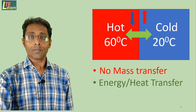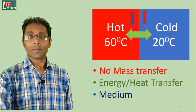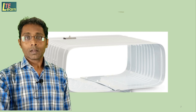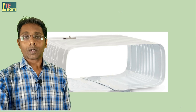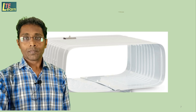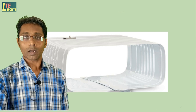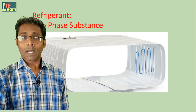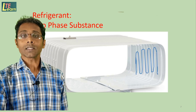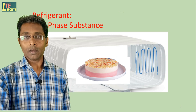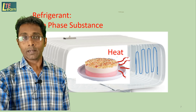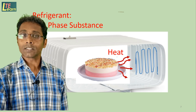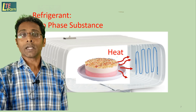For heat transfer from the refrigerator to the surrounding, there is a need of a medium. In the refrigerator, this is the section where we store very cold products — it is called the evaporator. Very cold refrigerant from the expansion valve flows and passes through these coils, called evaporator coils. Whatever is kept here will have a high temperature, so it will lose heat. This heat is absorbed by the liquid refrigerant inside the cooling coil, and a phase change takes place — it becomes vapor.